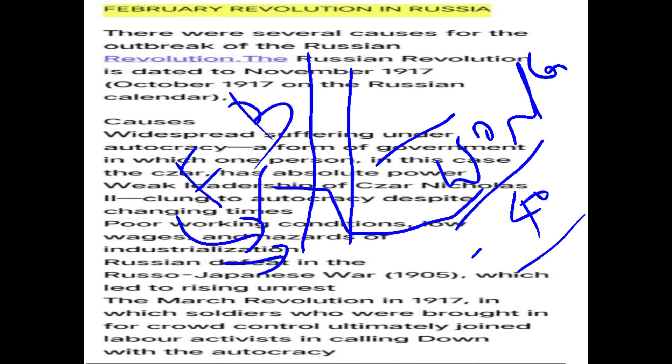Once again, the workers came back on February 24th and 25th, this time ransacking different government buildings thoroughly. On February 26th, the soldiers who had previously controlled the workers joined together with the workers, and that combined group was called a Soviet.